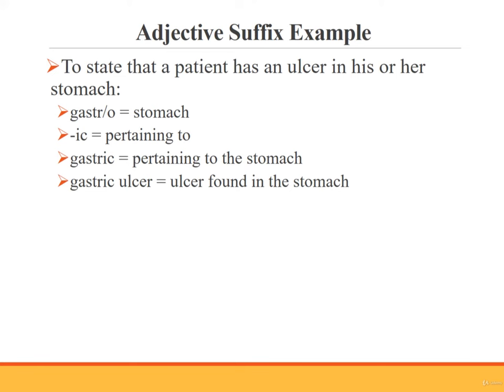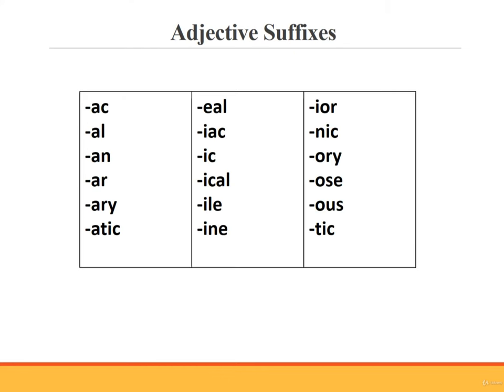Some suffixes are used to change a word root into a complete word. These suffixes share a single meaning: pertaining to. The new word created by combining these adjective suffixes with a root can then be used to modify another word. For example, to state that a patient has an ulcer in his or her stomach, the root gastro, which means stomach, is combined with the suffix -ic, which means pertaining to. This creates the word gastric, which means pertaining to the stomach. If you place the word gastric in front of the word ulcer, you have gastric ulcer, which means an ulcer found in the stomach. The list of adjective suffixes includes: -ac, -al, -an, -ar, -ary, -atic, -eal, -ic, -ile, -ine, -ior, -nic, -ory, -ous, -tic.